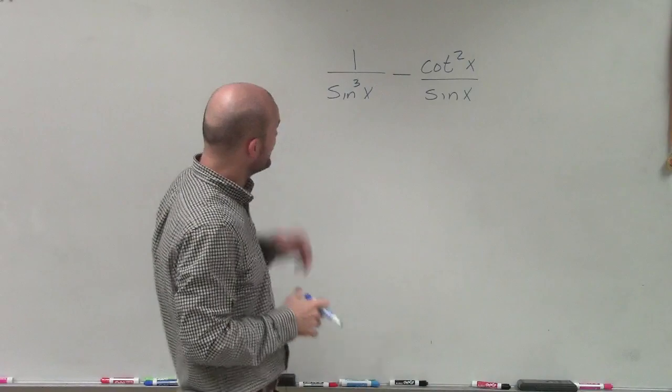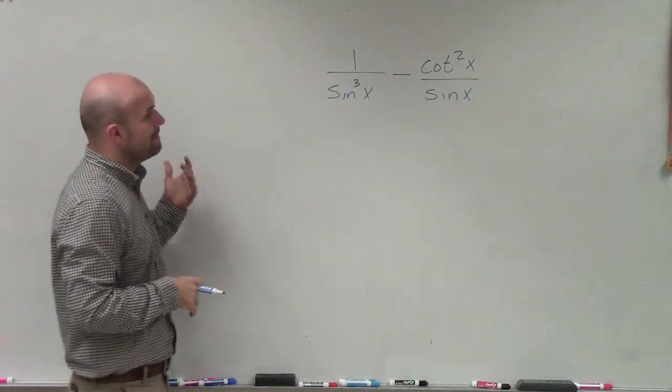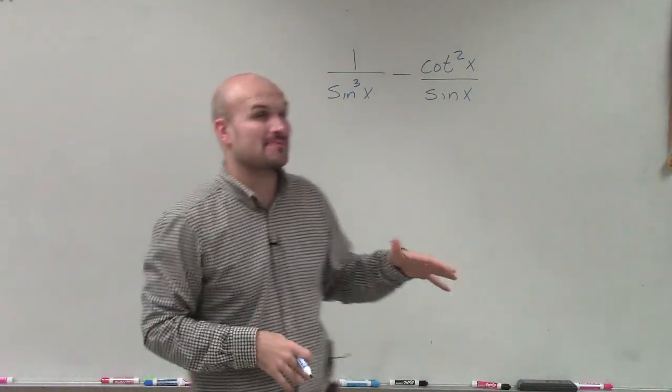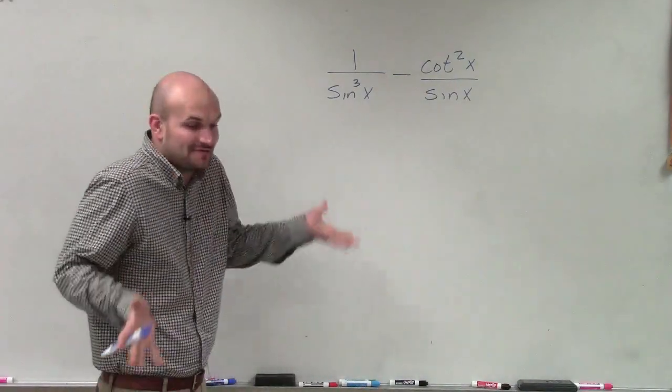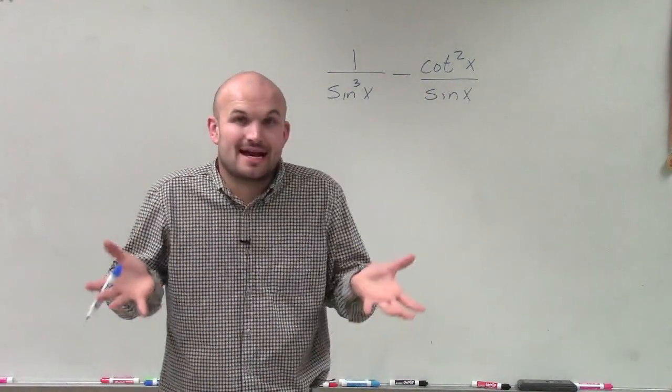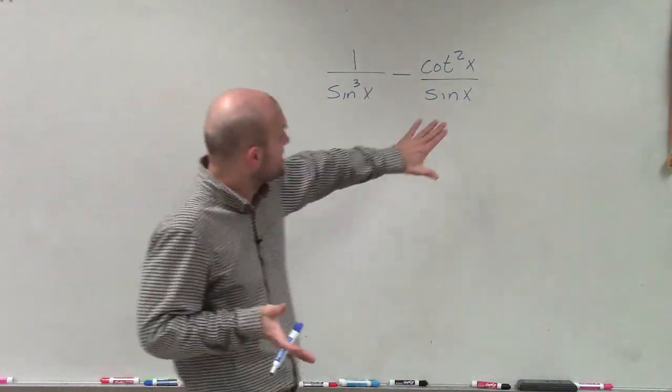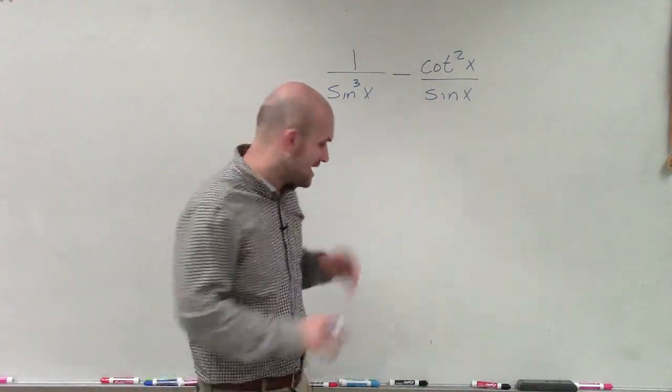OK, so what I have here is 1 divided by sine cubed of x minus cotangent squared of x divided by sine of x. And again, what I'm going to want to do here is I have two rational expressions and I had this operation of subtraction. So to do that, I've got to make sure I have my common denominator.